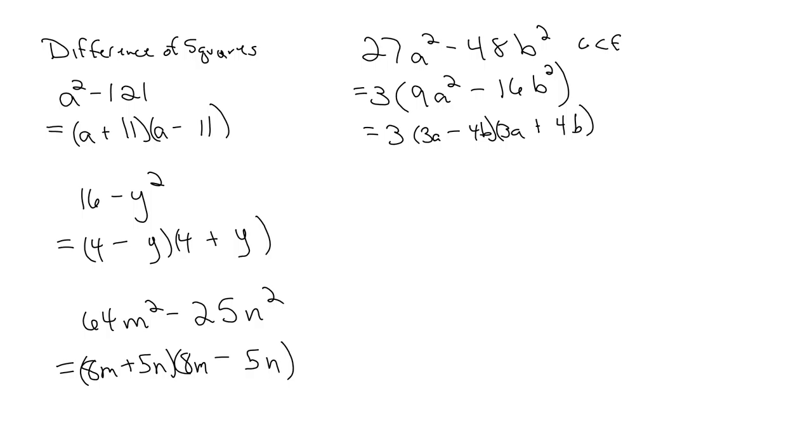If we have this one: x to the 4th minus 16. Do not be deceived. If we go to factor this, that x to the 4th comes from x squared and x squared. 16 comes from 4 and 4. And we have a plus and a minus.